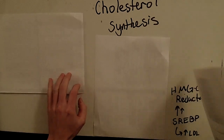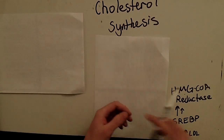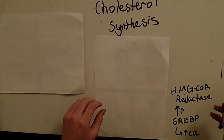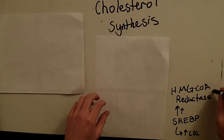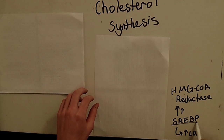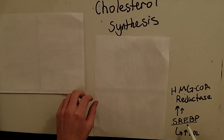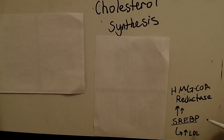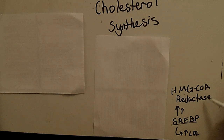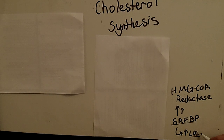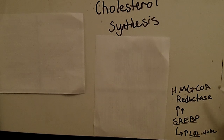Let's look generally at the regulation of the pathway first. HMG-CoA reductase is the key enzyme for regulation. Interestingly, it can be upregulated by SHREB-P, the sterol regulatory element binding protein, which binds on the regulatory element and causes upregulation of HMG-CoA reductase. It also causes upregulation of LDL intake, which makes sense because it causes both increased cholesterol synthesis and more cholesterol uptake, since the LDL particle is primarily cholesterol.